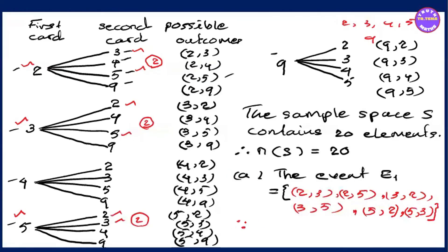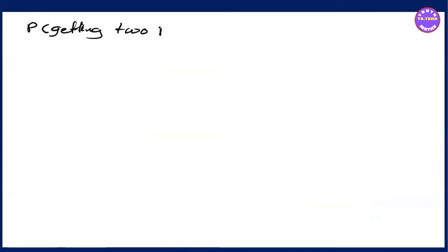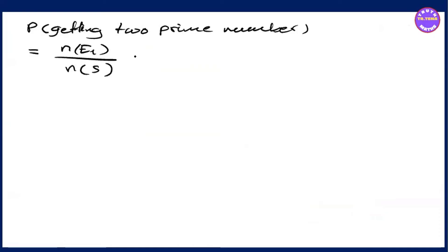The number of favourable outcomes is N of E1. N of E1 equals 6. That's why the probability is 6 over 20. The probability of getting a prime number is N of E1 divided by N of S, equal to 6 over 20.